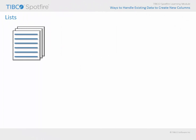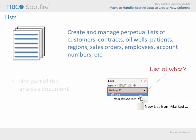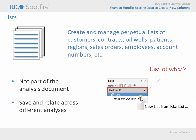Another option for capturing marked values is the lists tool. You could save lists of customers, contracts, oil wells, patients, regions, sales orders, employees, account numbers — any single column of data from your analysis using the list tool. Much like tags, lists are created by association with data you have marked. However, unlike tags, lists are stored separately from the analysis document. This is useful because it allows you to extract data of interest and relate that information across different Spotfire analysis sessions.